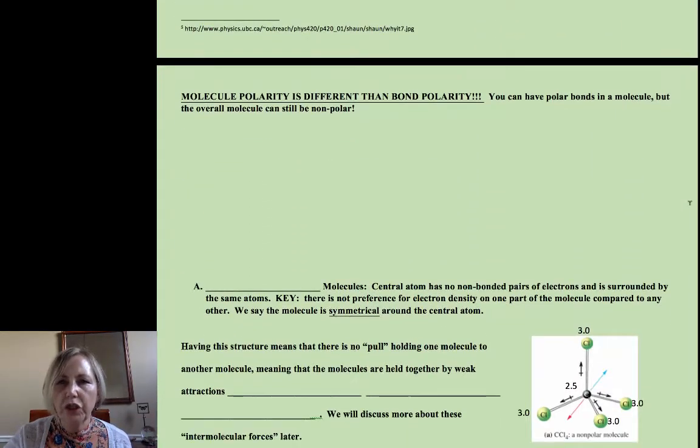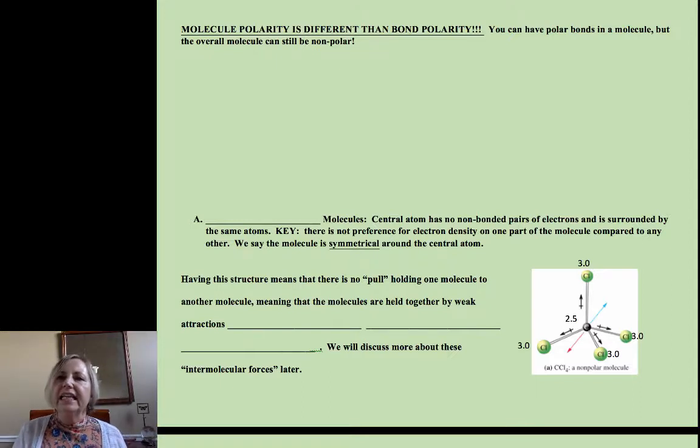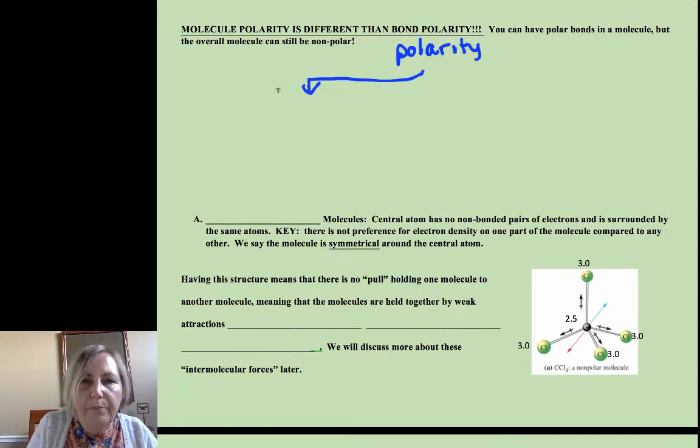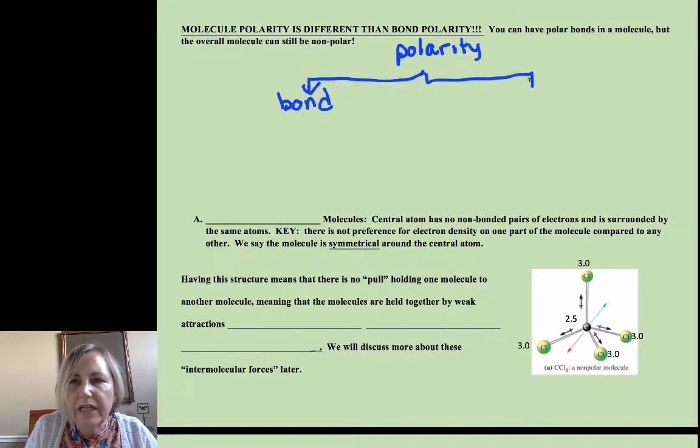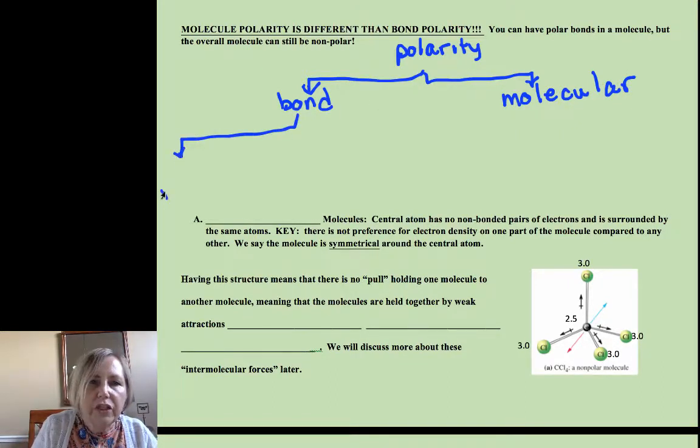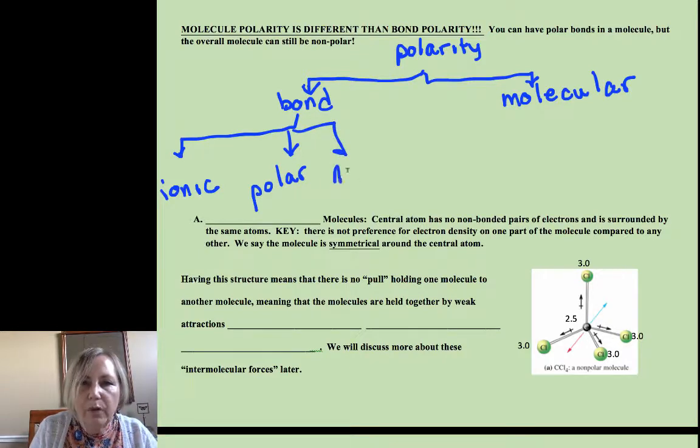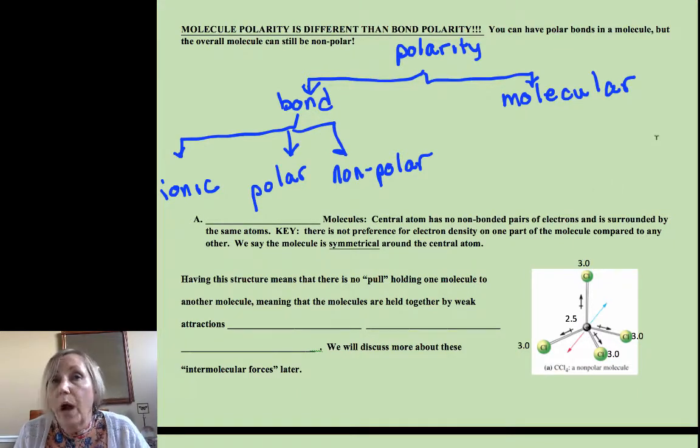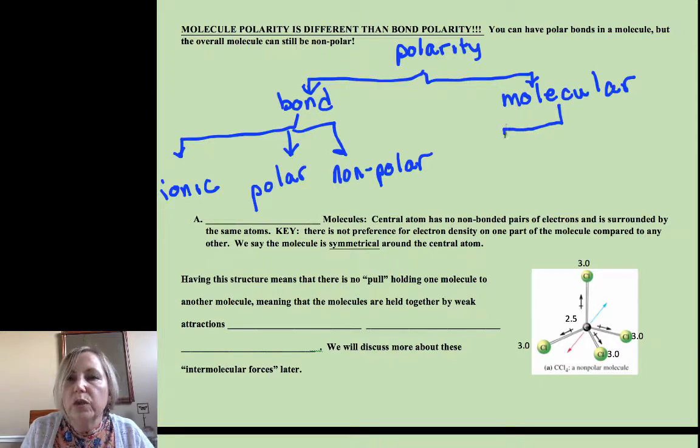One of the things I want to caution you about is molecular polarity is related to bond polarity, but cannot be equated with it. So if we want to talk about polarity in general, we have bond polarity and we have molecular polarity. With bond polarities, we can go all the way to ionic and we can have polar bonds and we can have nonpolar bonds. If we have a diatomic molecule like HF, if the bond is polar, then the molecule is polar because all the molecule is, is a bond. So its bond polarity does dictate its molecular polarity.